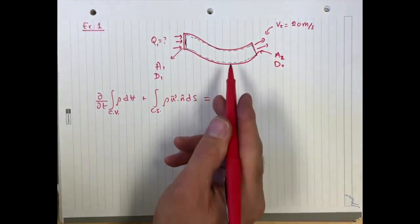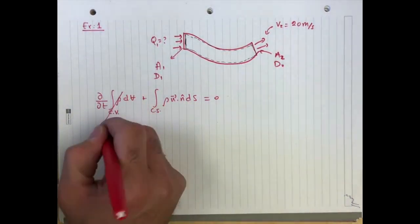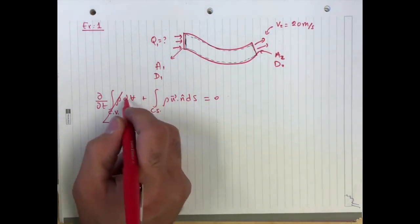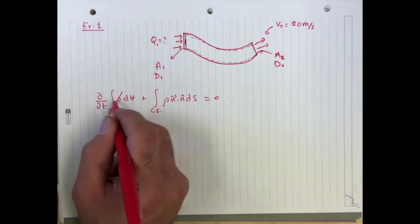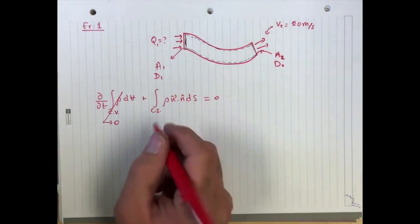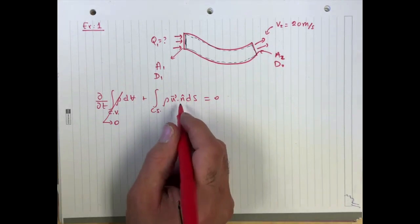Now, because the density is constant, I'm assuming that I'm pumping water, we're going to take this to be zero because there's no rate of change. There's no time rate of change for the mass in this control volume for the density. That leaves us with this integral.